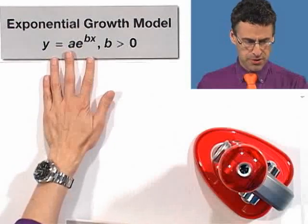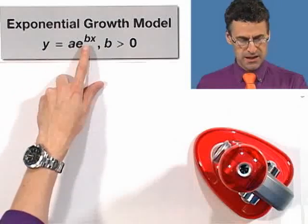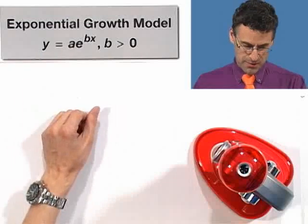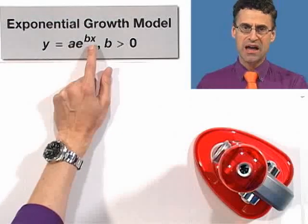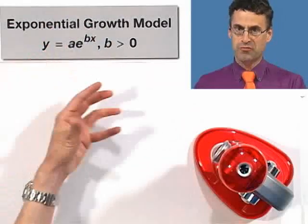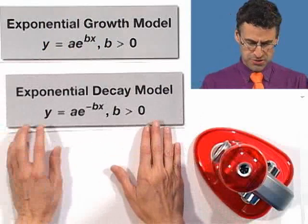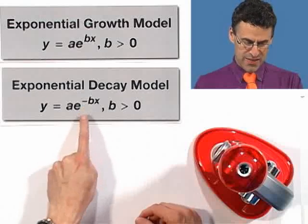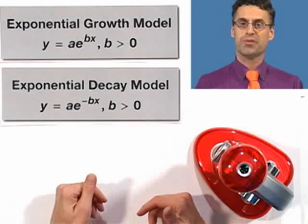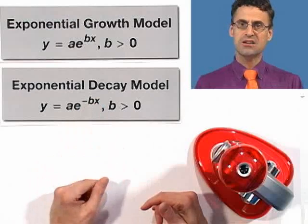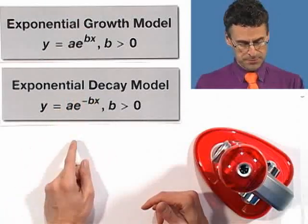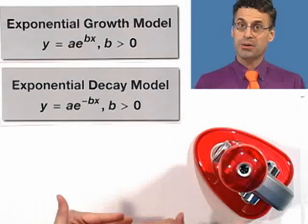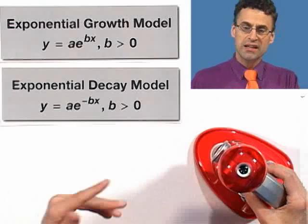The model for exponential growth is y equals ae to the bx, where a and b are constants that we have to somehow figure out. And the x represents the time, and the y represents the amount of population. And exponential decay is extremely similar. The only difference is that there's a negative sign here. The mysterious quantities a and b are determined by the given parameters of the particular question.